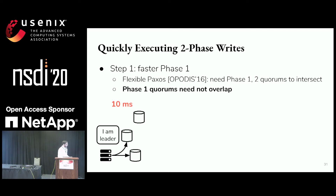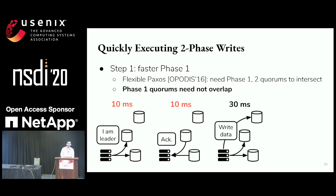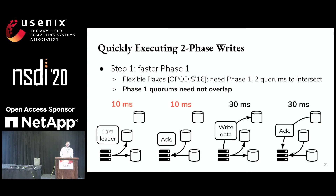The effect is that in phase one, we can execute it much more quickly — we contact fewer, more local data sites, and we can execute phase one in 20 milliseconds instead of 60. Phase two executes just as before. We've brought write latency down from 120 milliseconds to 80 milliseconds.